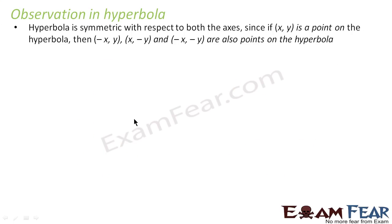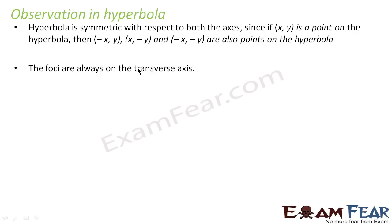Observations about the hyperbola: the hyperbola is symmetric with respect to both axes. If (x, y) is a point on the hyperbola, then (−x, y), (x, −y), and (−x, −y) will also be points on the hyperbola. The foci always lie on the transverse axis.